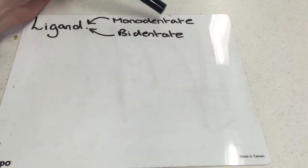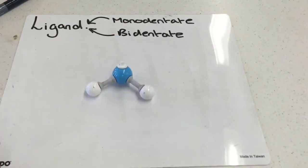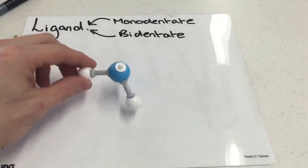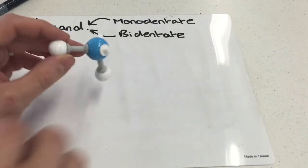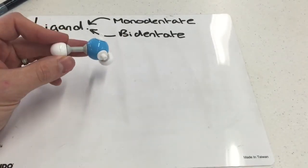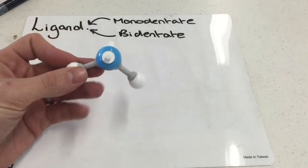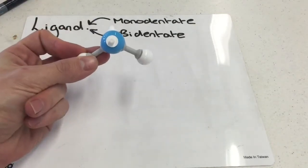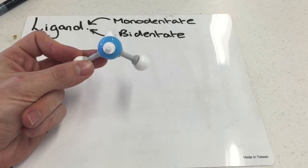Now a monodentate ligand means it bites once and so the most common example of that is a molecule of water. A molecule of water has got two lone pairs of electrons and one of these lone pairs is going to form a coordinate bond to a transition metal ion.